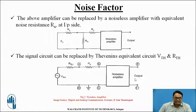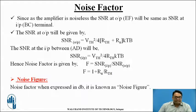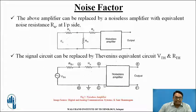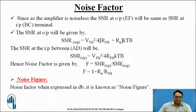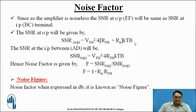For this circuit we find out Vth and Rth. Since the amplifier is noiseless, the SNR at the input terminal will be the same as at the output terminal. Points B and C are the input points and E and F are the output points, so the SNR at these points will be the same.